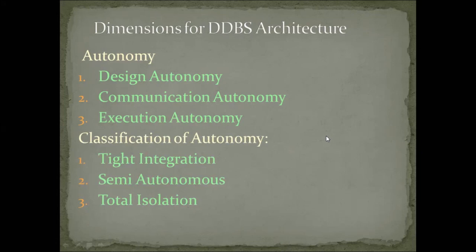Only a single common view can be accessed, and think about that component databases did not exist — that common view doesn't exist on a component basis. Second is semi-autonomous: users can get only a single common view, and again think that component databases did not exist.